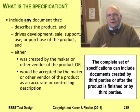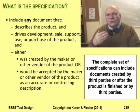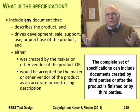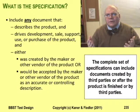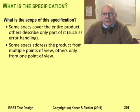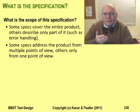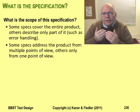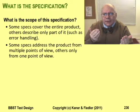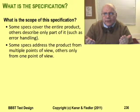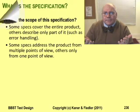Part of the spec-based testing task is to gather the documents that make up the specification and figure out what parts of the product are covered by the spec, what parts are covered by more than one spec, and what parts are simply unspecified. As the product evolves, does the spec evolve with it? If so, how do you know you have the right version? How long does it take to find out that the spec has changed and what the changes are?